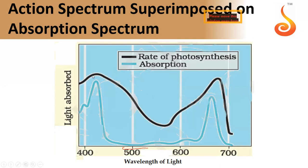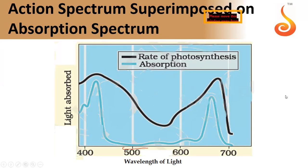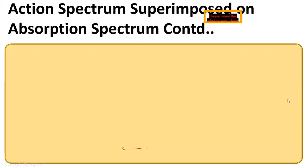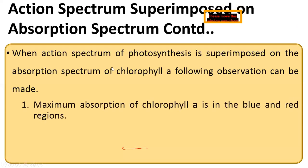Looking at the action spectrum graph, the black curve shows an increased rate of photosynthesis at two different wavelengths. Comparing it with the absorption spectrum of the pigments, there is a close superimposition with chlorophyll A's absorption peaks and the maximum rate of photosynthesis shown. Since exactly the same wavelength ranges show both maximum chlorophyll A absorption and increased photosynthesis rate, we can conclude that chlorophyll A is the most essential pigment for photosynthesis.